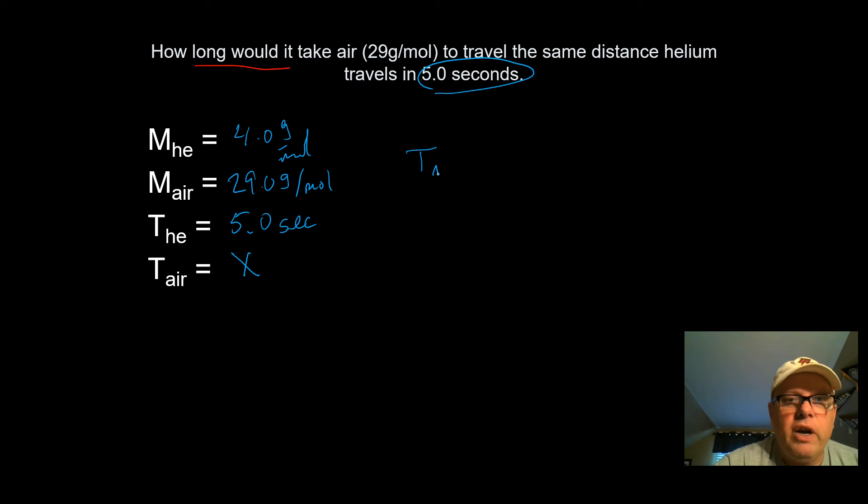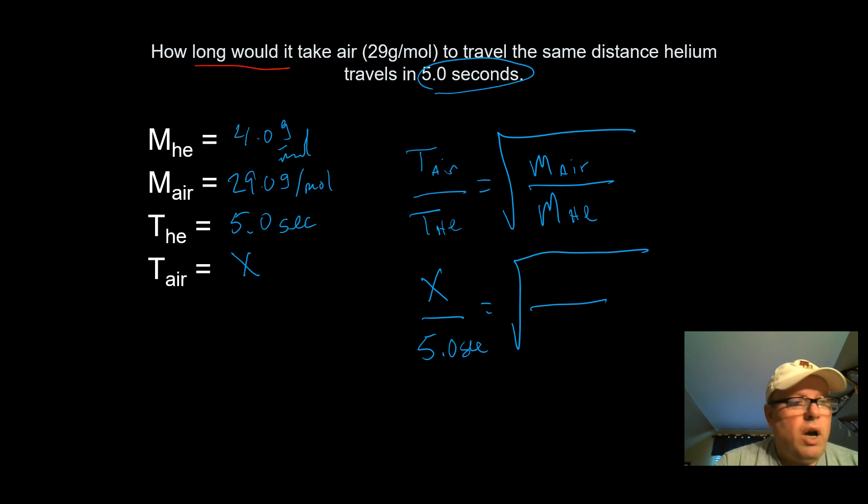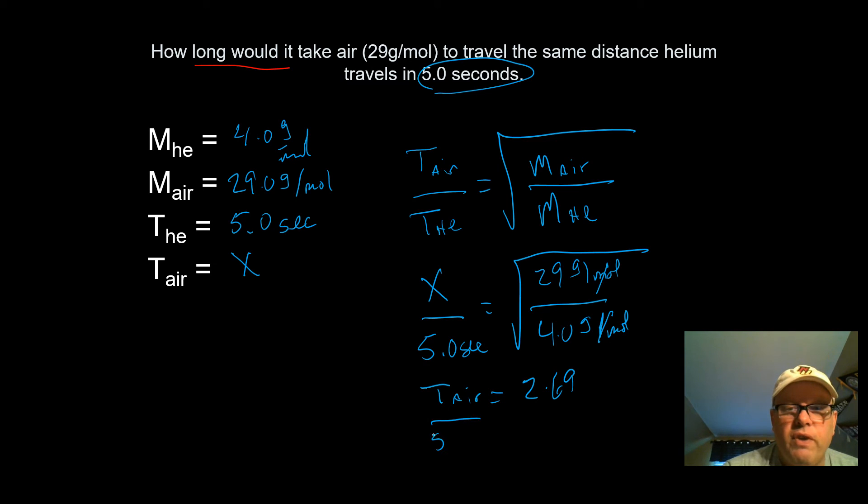So our Graham's law here, what we're going to do is time of air over the time of helium is equal to the square root of mass of air over the mass of helium. So now I'll input my values. Time of air is the X over time of helium, which is 5.0 seconds. And that will be set equal to the square root of mass of air, which is 29 grams per mole, and helium is 4.0 grams per mole. What will now happen is these units, again, will cancel each other out. And I get initially the time of air, which is the X, equal to 2.69. And it's still sitting over 5.0 seconds.